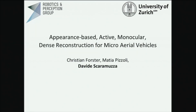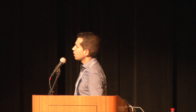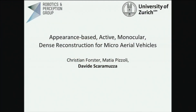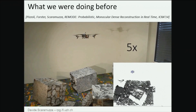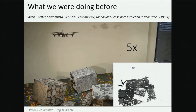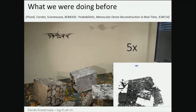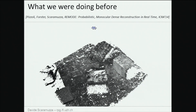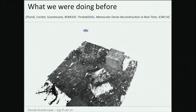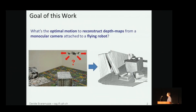My name is Davide Escaramuzza from the University of Zurich, and today I'm going to talk about appearance-based active monocular dense reconstruction for micro aerial vehicles, work by my students Christian Forsten and Mattia. At the last IROS conference, we presented an approach for monocular dense reconstruction applied to micro aerial vehicles, computing in real-time both the depth and uncertainty of each pixel belonging to a reference image. The problem was that the optimal trajectory was selected manually by the user. Here, we tackle the research question: what is the optimal motion to reconstruct dense maps from a monocular camera attached to a flying robot?